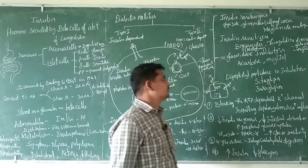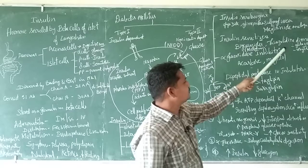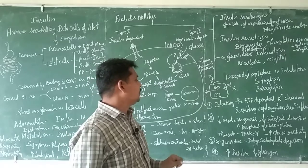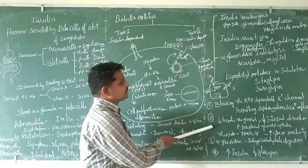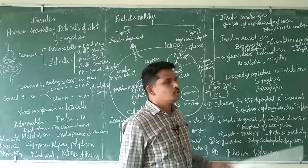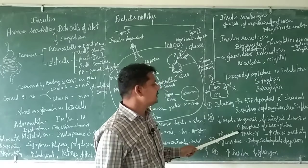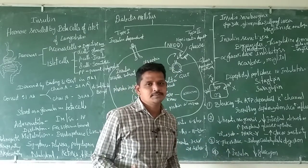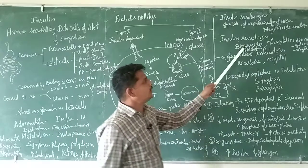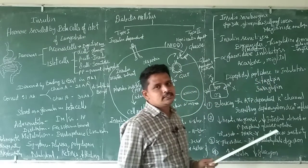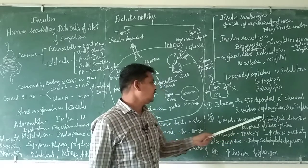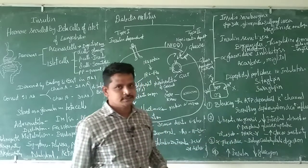Next are insulin sensitizers, for example metformin and thiazolidinedione derivatives such as rosiglitazone. These agents decrease hepatic gluconeogenesis, decrease intestinal absorption of glucose, and increase peripheral glucose uptake. By these three mechanisms, the glucose available in systemic circulation is utilized. Metformin and glitazones enhance peripheral glucose uptake, increase intestinal glucose utilization, and decrease hepatic gluconeogenesis.